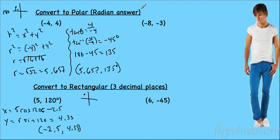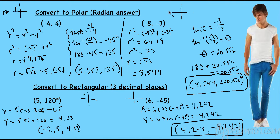Pause the video and do these two on your own. For (negative 8, negative 3): the radius is 8.544. For theta, the inverse tangent gave 20.556 degrees — but that's in the first quadrant, and the point is in the third quadrant, so I add 180 to get 200.556 degrees. For (6, negative 45): X equals 6 cosine negative 45 giving 4.242, and Y equals 6 sine negative 45 giving negative 4.242. Positive X, negative Y puts us in the fourth quadrant — which matches negative 45 degrees.